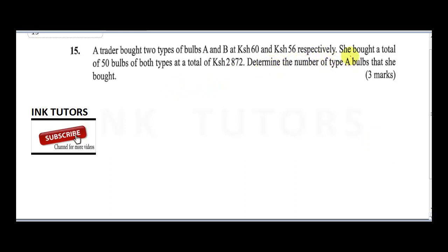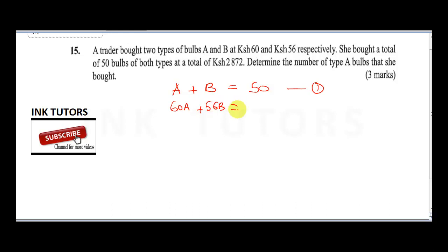To solve this, since she bought a total of 50 bulbs, we write: a + b = 50 — call this equation one. She bought bulbs at 60 shillings for type A and 56 shillings for type B, so: 60a + 56b = 2872 — call this equation two.